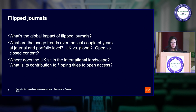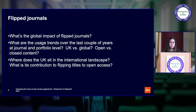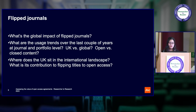Another area of interest, particularly for our transition agreement oversight group, is looking at flipped journals. What's the impact — and the global impact — of a flipped journal? Is it actually seeing more usage now that it's open? What are the trends over time, looking at both portfolio and publisher level, UK versus global? And a key question is: where does the UK sit within this international landscape? What's its effective contribution to flipping titles to open access?